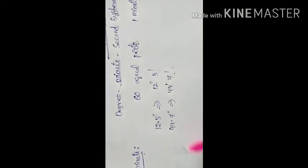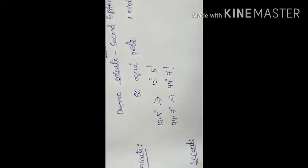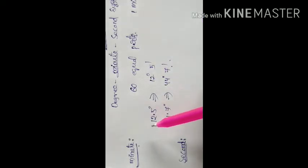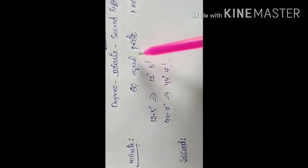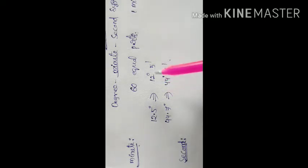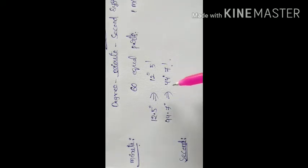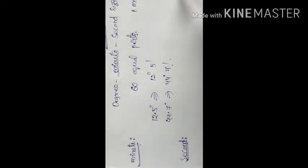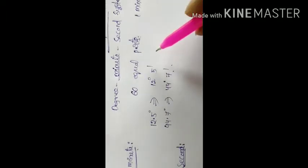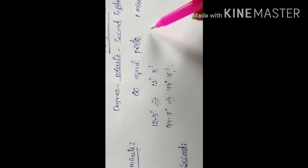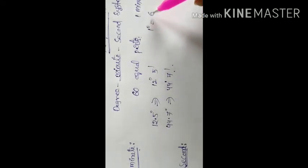Second: each minute is further divided into 60 equal parts, called seconds. The measure of an angle in seconds is denoted by double prime. So, 1 degree equals 60 minutes and 1 minute equals 60 seconds.